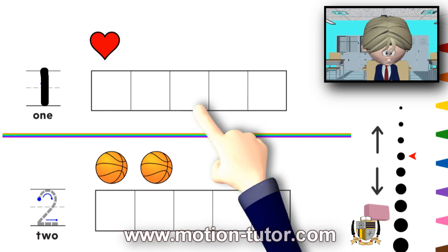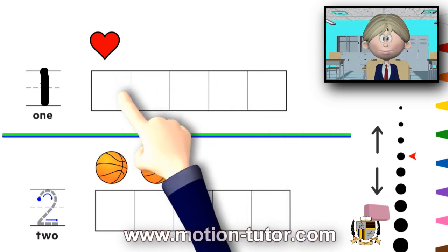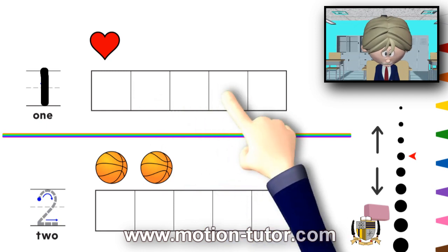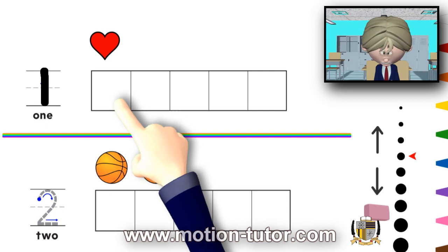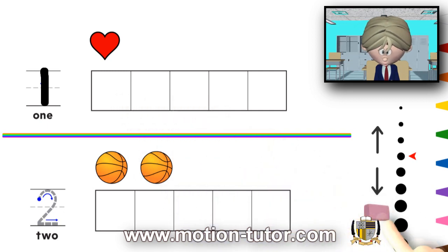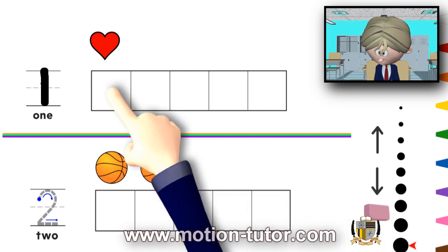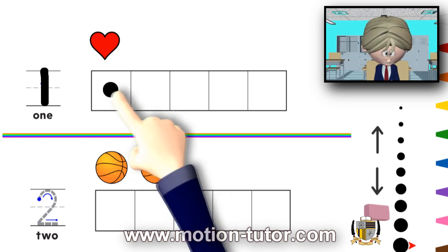Now, what this is, is called a 5 frame. And each space holds a counter. Now, I'm going to use this to further show the number 1. Let me show you what I'm talking about. Ready?